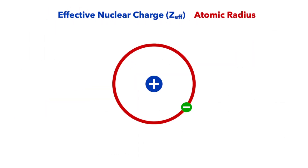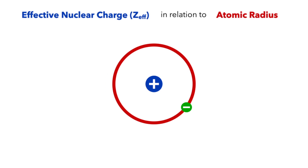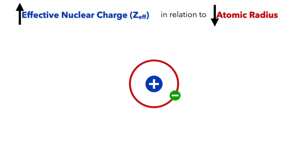So what does effective nuclear charge have to do with atomic radius? Well, the higher the effective nuclear charge of an atom, the stronger the pull the nucleus has on its electrons, pulling them in, making it a smaller atom.